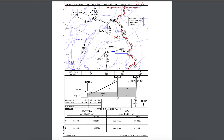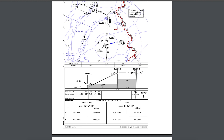This is the RNP approach, also mentioned in the vertical profile. LNav VNav decision altitude is 1,050 feet. We cannot go below this. These are the visibility requirements — if there is sufficient visibility, we can fly this approach; if not, we cannot land. This is the diagrammatic representation.